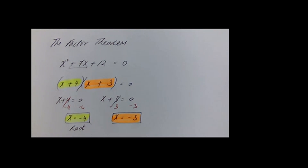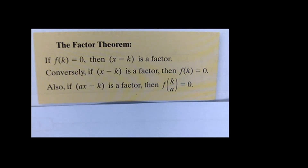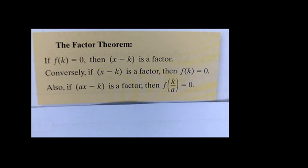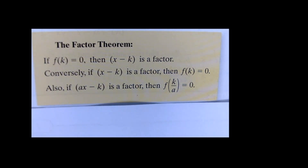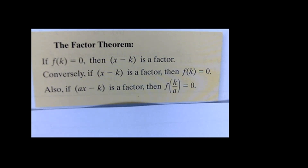That is basically what the factor theorem says. It states: if f(k) equals 0, then x minus k is a factor. Conversely, if x minus k is a factor, then f(k) equals 0. And if you have something of the form ax minus k, then f(k/a) equals 0.